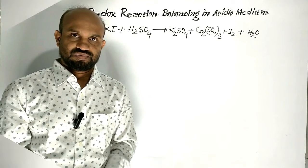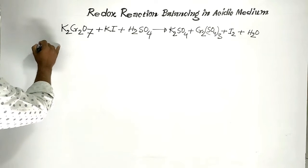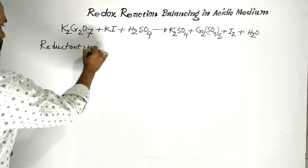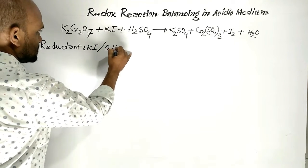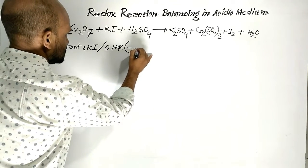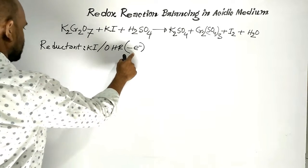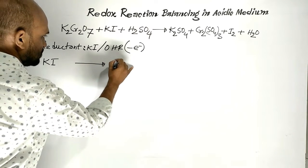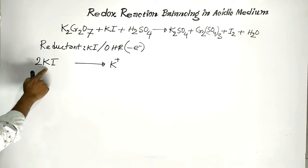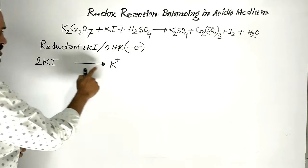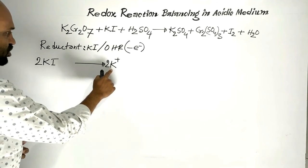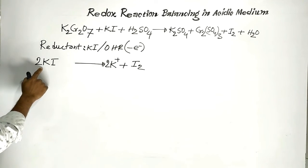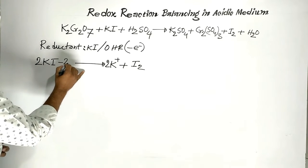Let us balance the reaction. In this reaction, potassium iodide is the reductant. Potassium iodide causes the oxidation half-reaction through the release of electrons in this way. Potassium iodide changes to potassium plus. Actually, two molecules of potassium iodide participate in the reaction. Then two potassium ions are formed and one molecule of iodine is formed. Two molecules of potassium iodide release two electrons in this way.